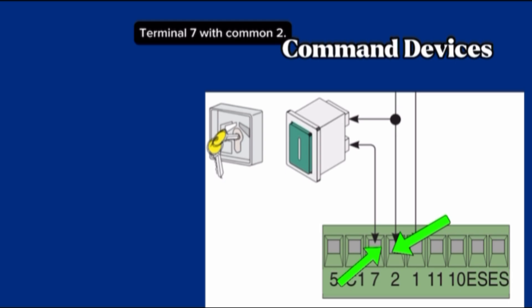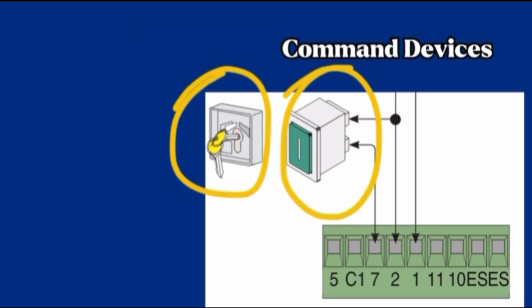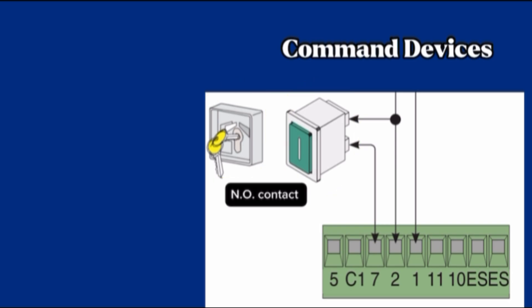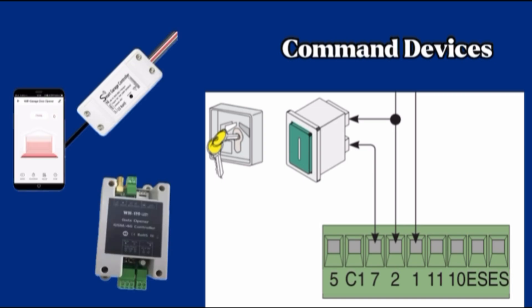Terminal 7 with common 2, key switch selector and or command button. It is NO contact. Commands for opening and closing by pressing the button or turning the selector switch key. This terminals you can use for Wi-Fi system or GSM to door open by mobile.